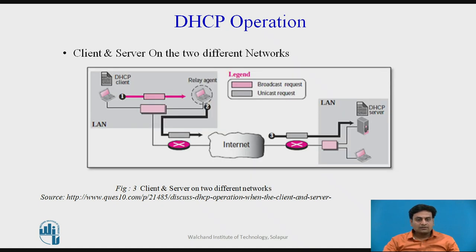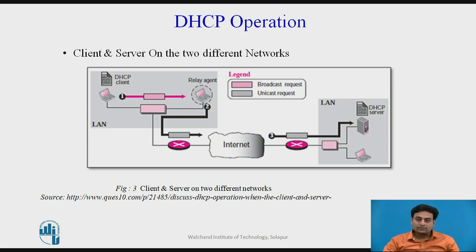A client can be in one network and the server can be in another network, separated by several other networks, as shown in figure 3. However, there is one problem that must be resolved. The DHCP request is a broadcast because the client does not know the IP address of the server. A broadcast IP datagram cannot pass through any router — a router receiving such a packet discards it. Recall that an IP address of all ones is a limited broadcast address.